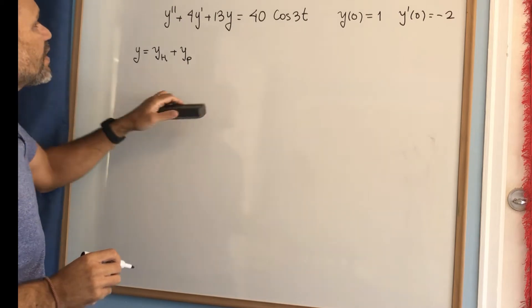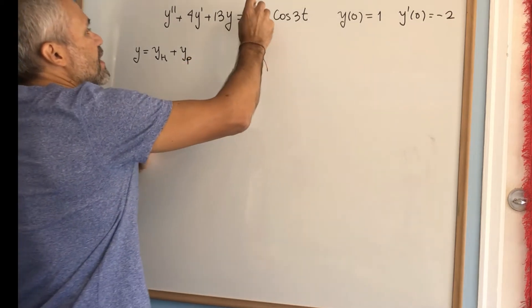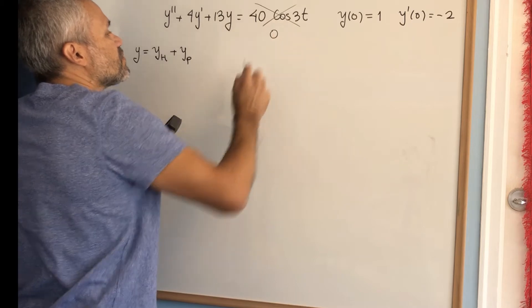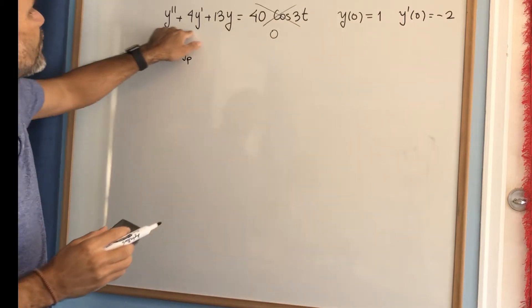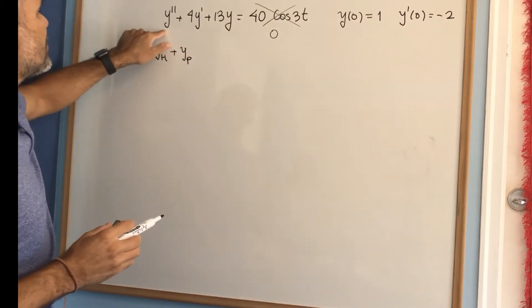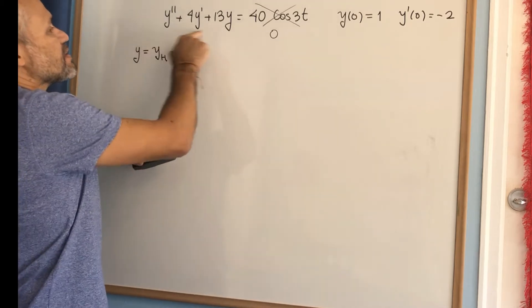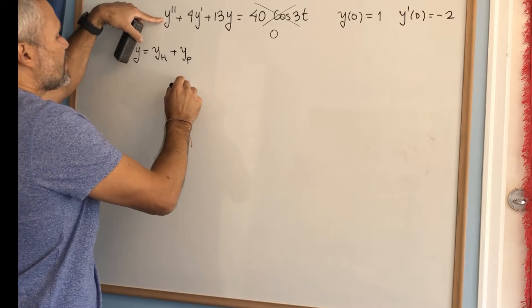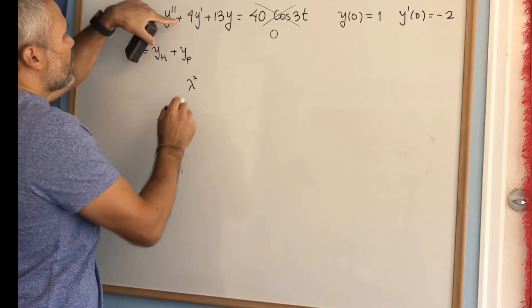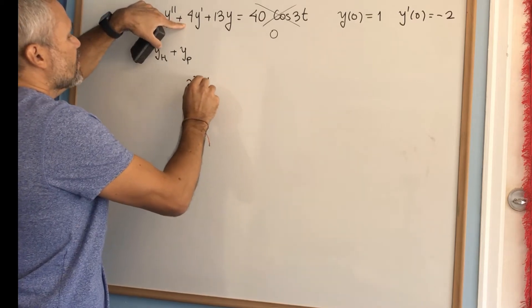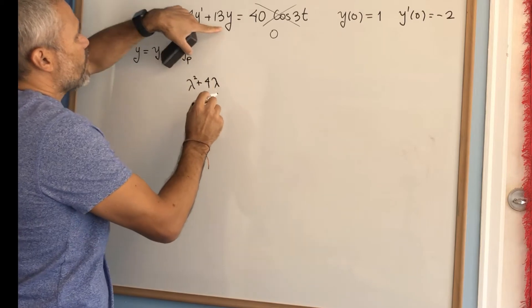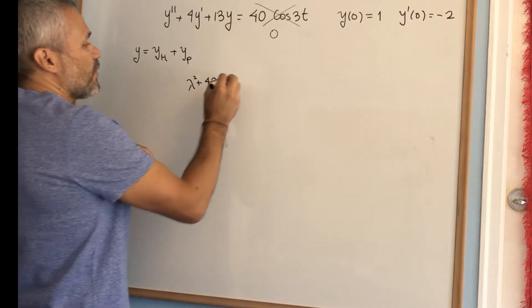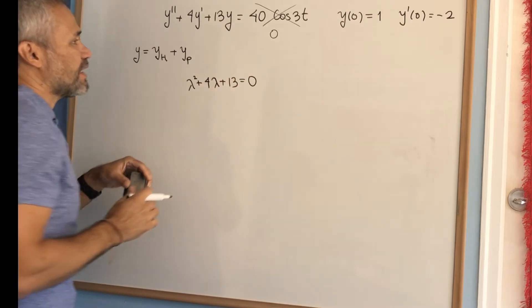To solve the homogeneous, we need to make the non-homogeneous part equal to zero, and then solve this second-order differential equation. To do that, we replace the second derivative by lambda squared, the first derivative by lambda, and y by just 1. Then we get a quadratic equation.